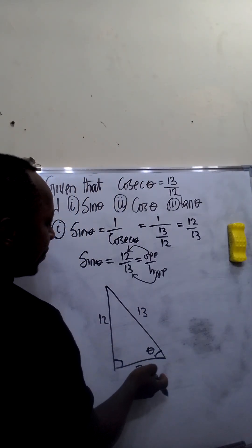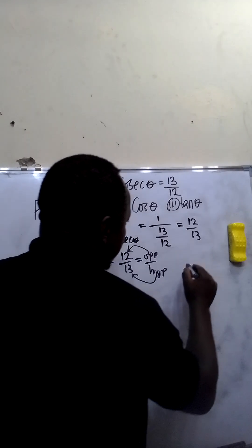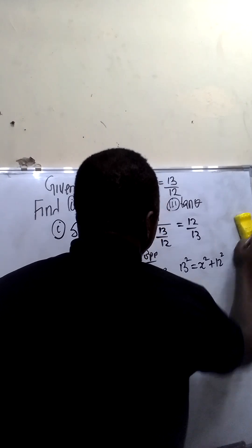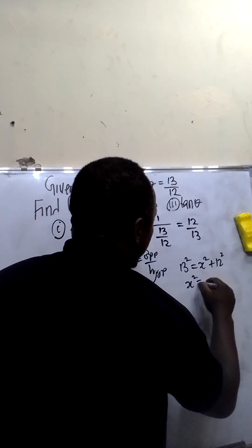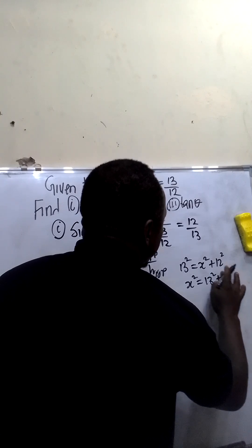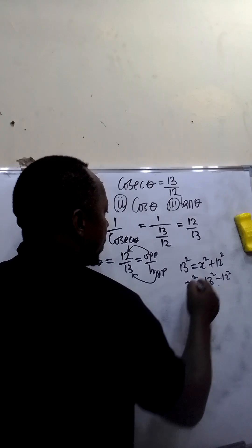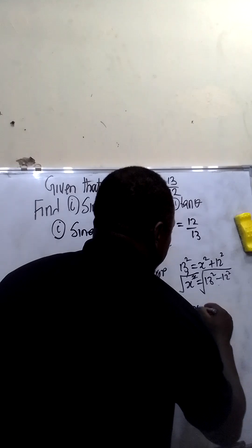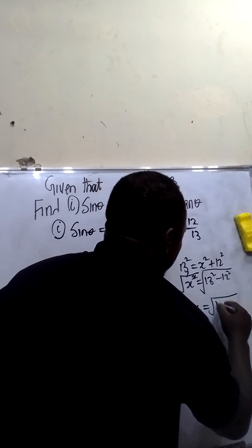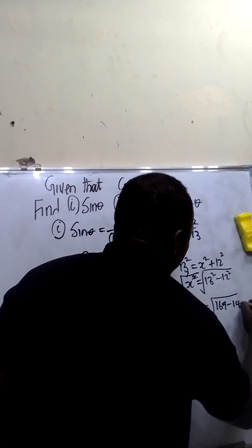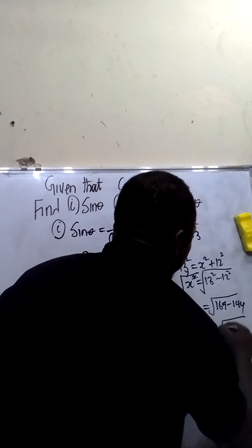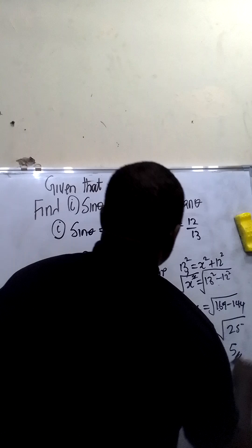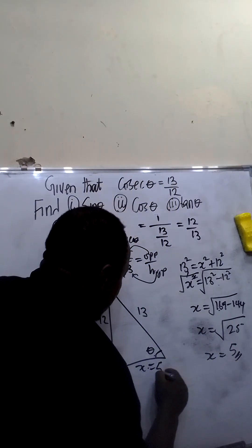From Pythagoras' theorem, we can get the value of x. This implies 13 squared is equal to x squared plus 12 squared. Rearranging: x squared equals 13 squared minus 12 squared. Taking square roots on both sides: x equals the square root of 169 minus 144, which is the square root of 25, so x equals 5. Our adjacent is equal to 5.